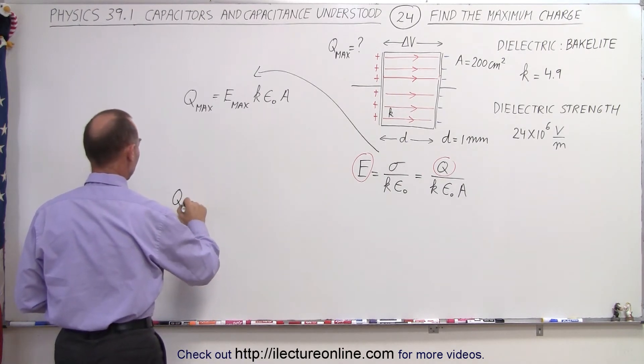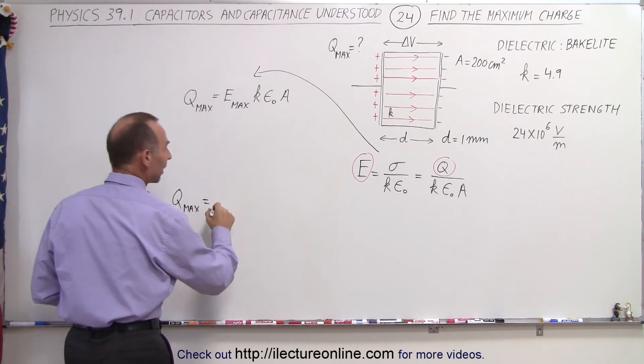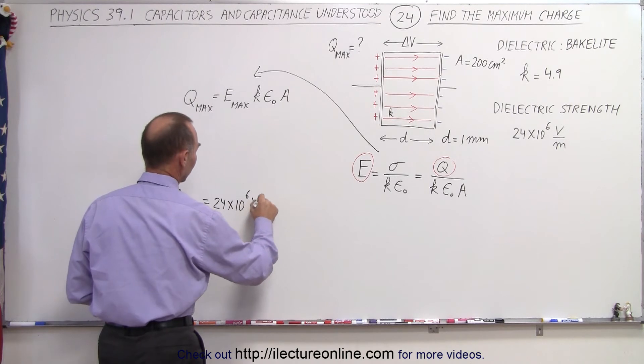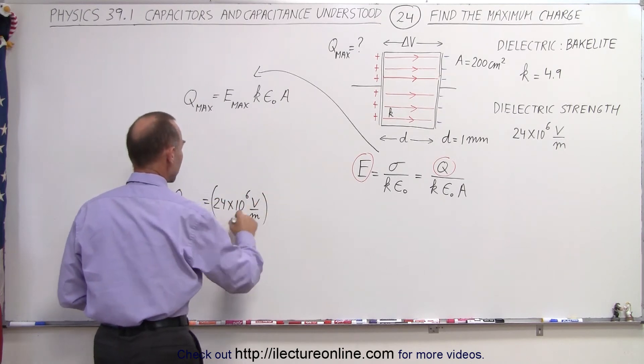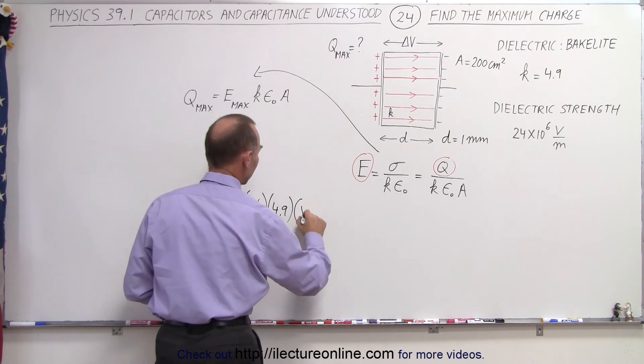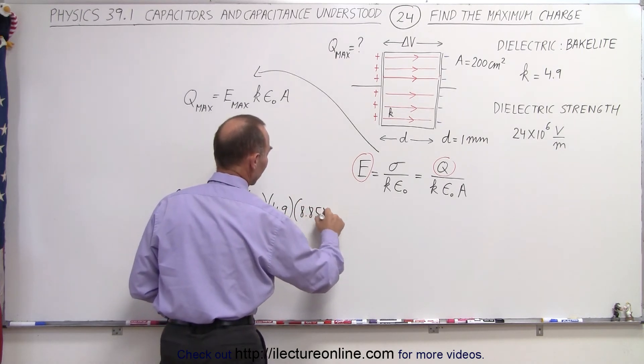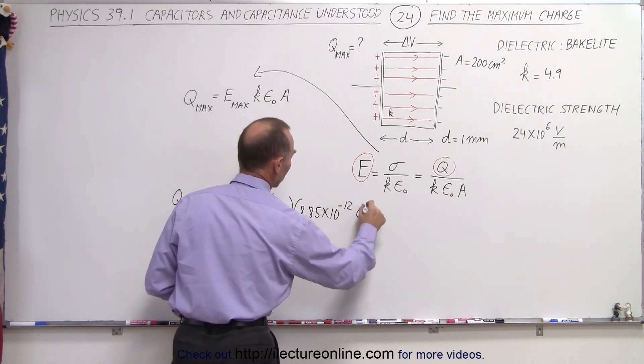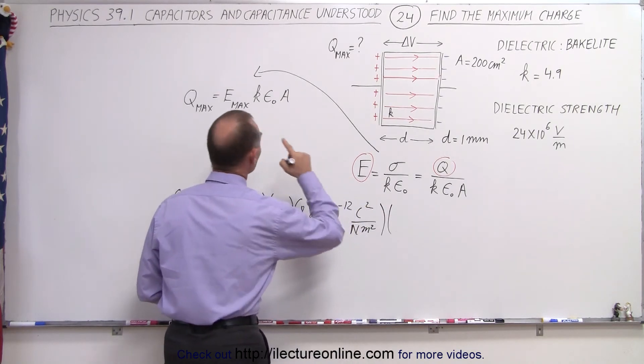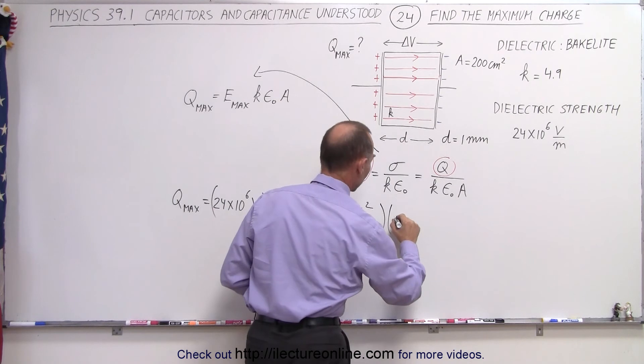So we have q max is equal to E max, which is 24 times 10 to the sixth volts per meter. K for Bakelite, 4.9. Epsilon sub nought, 8.85 times 10 to the minus 12 coulomb squared per newton meter squared. And the area in this case is going to be 200 centimeters squared.